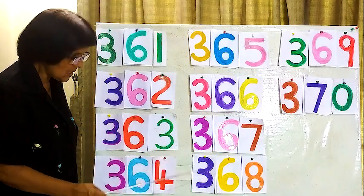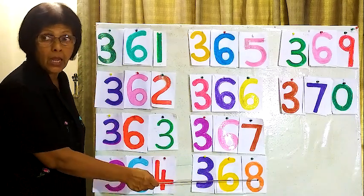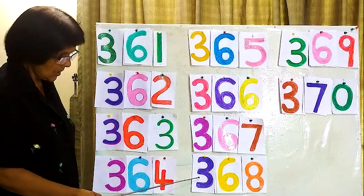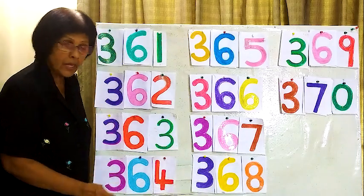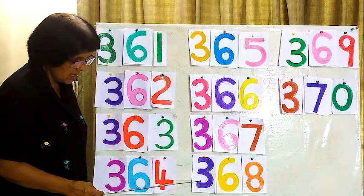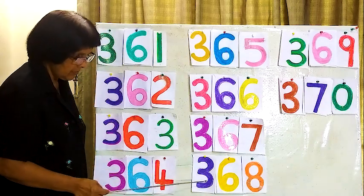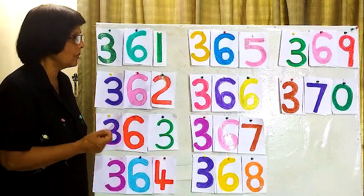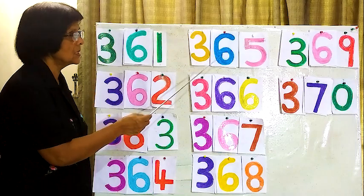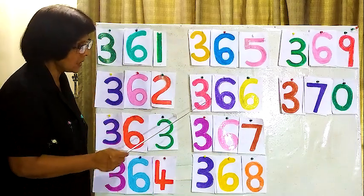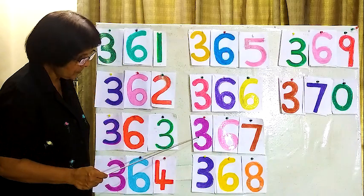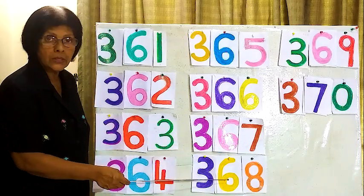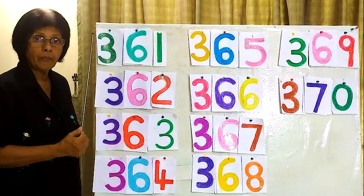368, this is how we are writing 368, 368. We will read from the beginning here: 365, 366, 367, 368.